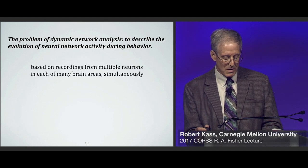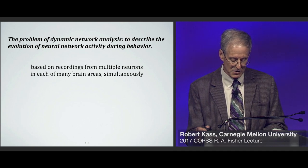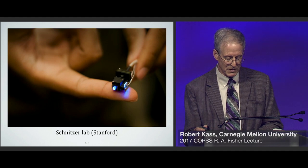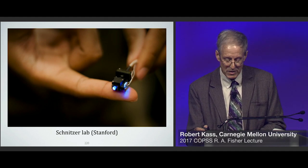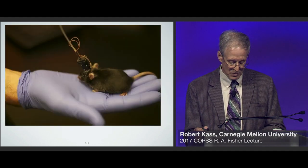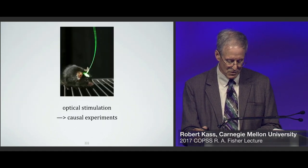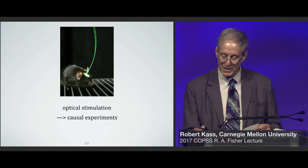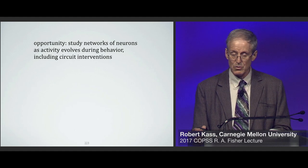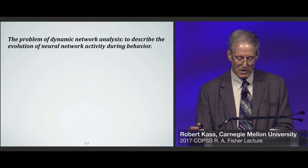Assume we will have recordings from multiple neurons in each of many brain regions simultaneously — this kind of thing is just beginning to happen and will become common in the next 10 years, using a variety of technologies including electrode arrays and techniques that image fluorescent signals emitted from labeled sets of neurons when they fire. Shown here is an endoscopic device — basically an iPhone camera on a fiber optic cable — that can be inserted deep into an animal's brain and is light enough to use on a behaving mouse. Optical methods are also being used to either drive or shut down specific components of circuits so that causal experiments can be performed.